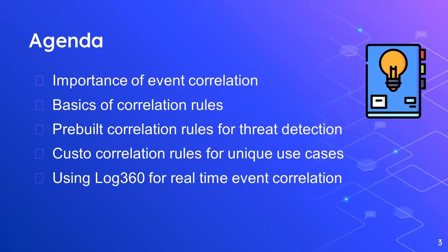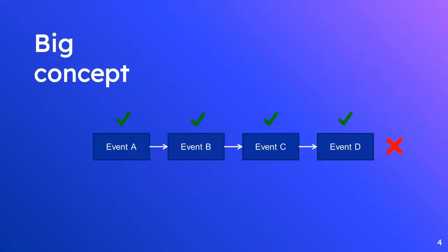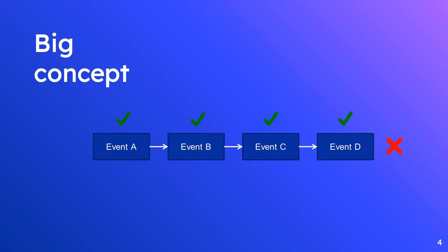We'll start with the big concept: what exactly is real-time event correlation? Take a look at this image — you have event A happening in one part of the network, and likewise events C and D happening in different parts. If these events were analyzed independently, you'd never know if they are actually malicious. You might think they're absolutely fine. But if you take these four events together as one sequence, you may well realize that something malicious is going on, and you can take appropriate action to rectify the situation.